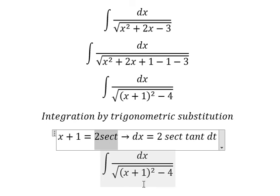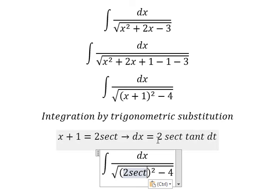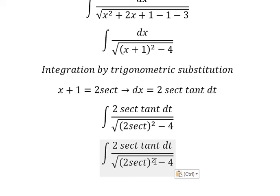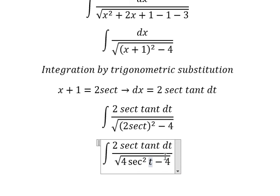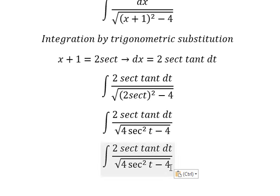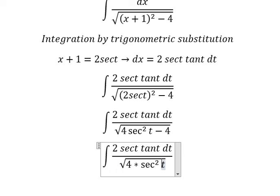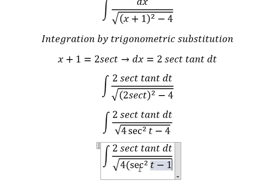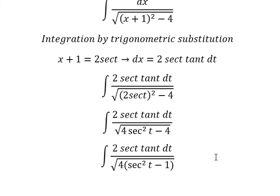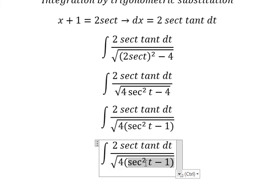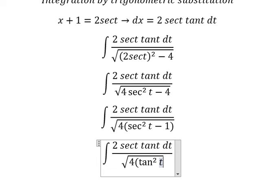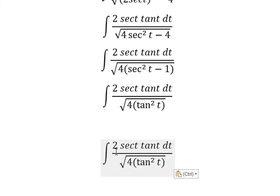I will substitute this in here. We have four secant of t squared minus four. We can do factorization: secant of t squared minus one, which we change to tan t squared. Taking the square root of four tan t squared gives us two tan t.